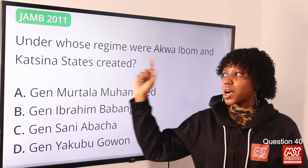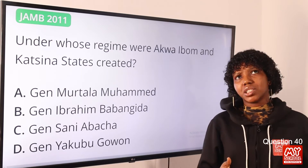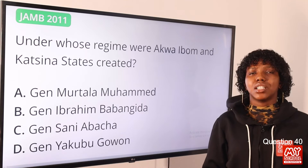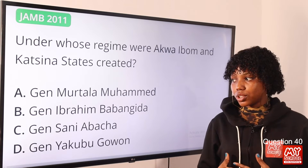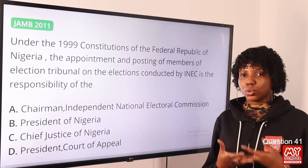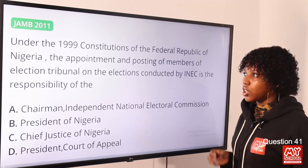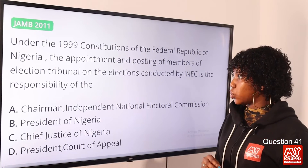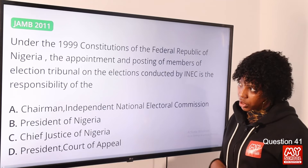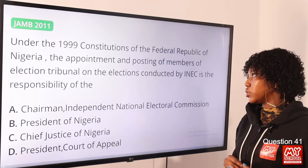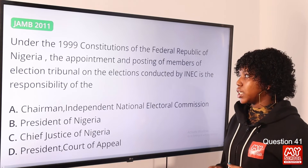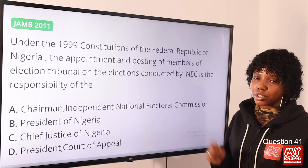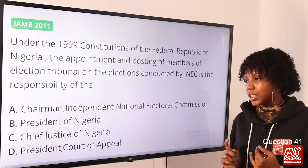Question 40: Under whose regime were Akwa Ibom and Katsina states created? The answer is option B, General Ibrahim Babangida. On the 22nd of September 1987, Ibrahim Babangida created two states: Akwa Ibom and Katsina. Afterwards, in 1991, he created an additional nine states.